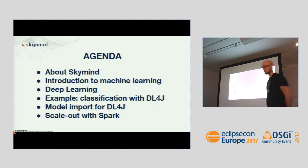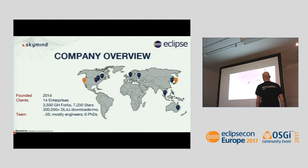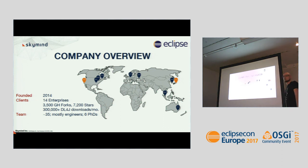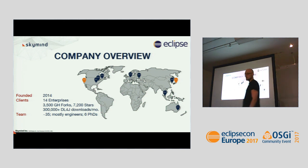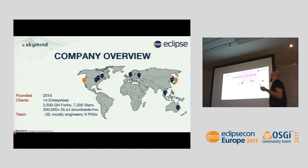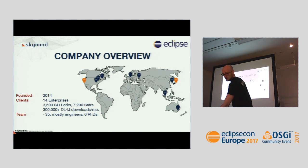SkyMind was founded in 2014. We're a fully remote and globally distributed company. I live in Hamburg, Germany, our CTO and co-founder Adam Gibson is in Tokyo, and CEO Chris Nicholson is in San Francisco. We're still a pretty small company, mostly deep learning engineers. We recently joined the Eclipse Foundation. SkyMind is the company behind Deep Learning for J and its ecosystem — we build deep learning solutions for the enterprise, specifically for the JVM.